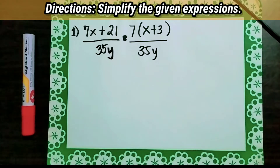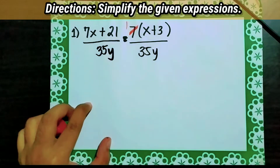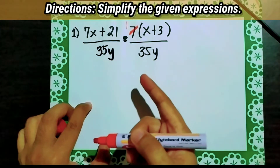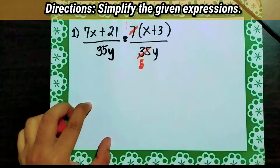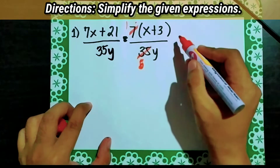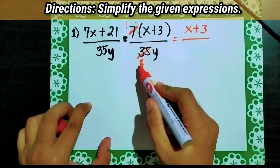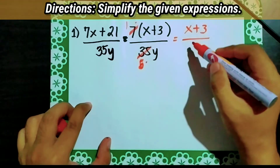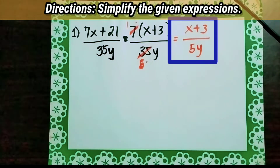Their common factor is 7. So using cancellation, 7 will become 1 — 7 divided by 7. And then 35 divided by 7 is equal to 5. So now let's multiply: 1 times x plus 3 is equal to x plus 3, over 5 times y, which is 5y. Our final answer is x plus 3 over 5y.